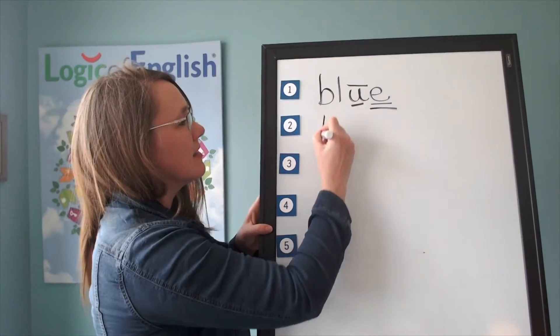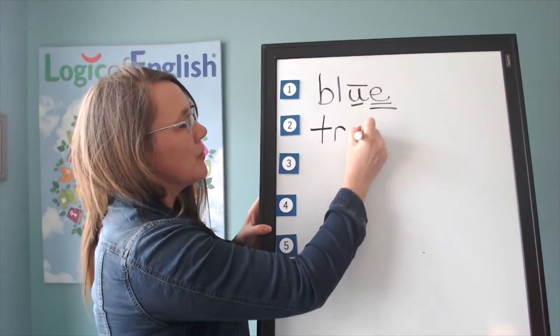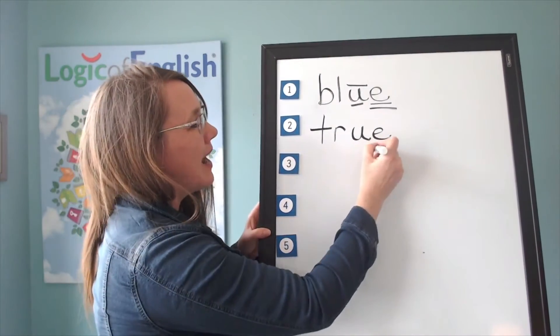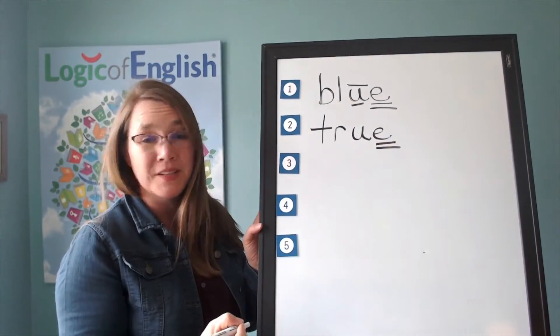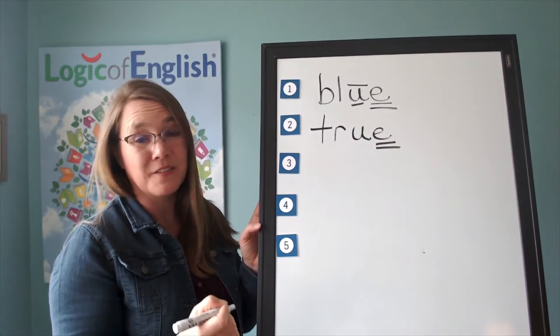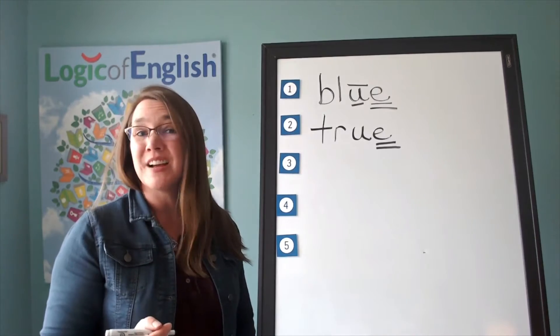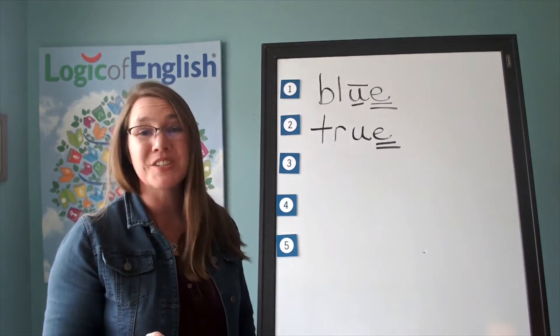Help me to write it. Tuh, ur, oo. Silent final E. Why do we have a silent final E in true? English words do not end in V or U. So we'll need the E. Another rule we know is English words do not end in I, U, V, or J.